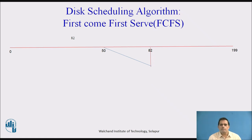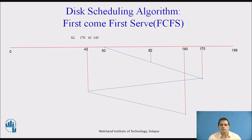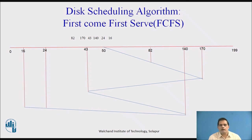This is the diagram showing the head movement following the FCFS order. The seek time here refers to the number of track movements made by the read/write head.